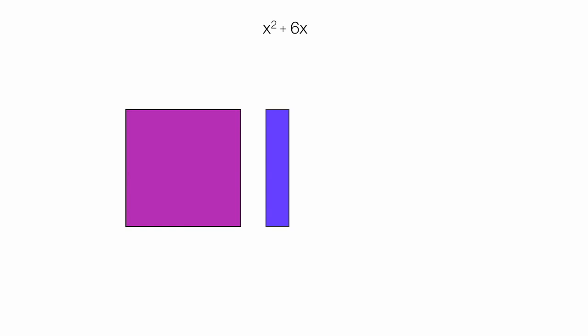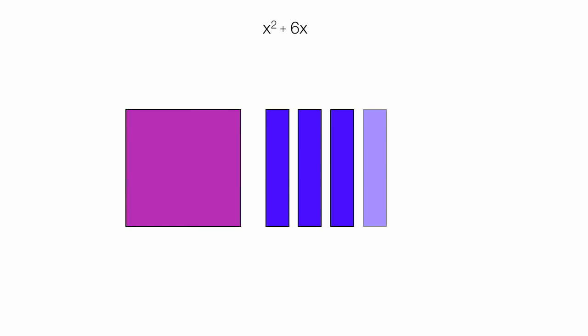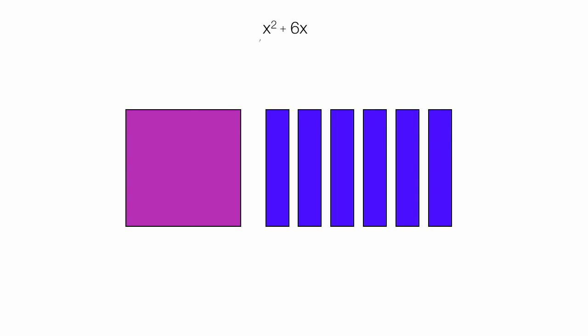The burgundy tile represents x squared, and the blue tiles represent 6x. Each one of them is x, and that's why there's six of them. There's 1 x squared and 1, 2, 3, 4, 5, 6 for the 6x.